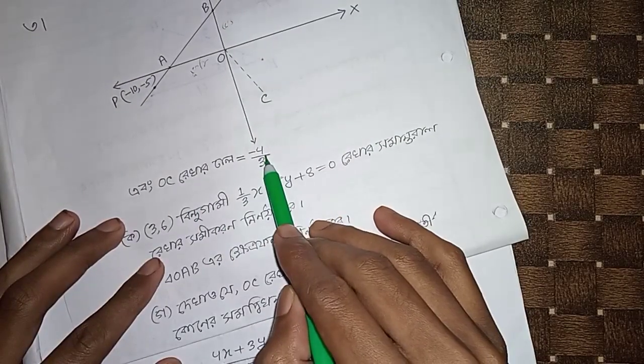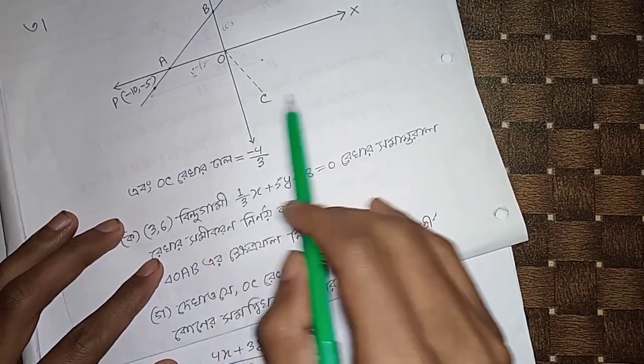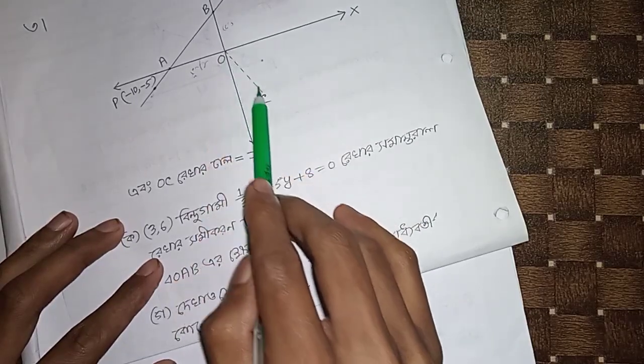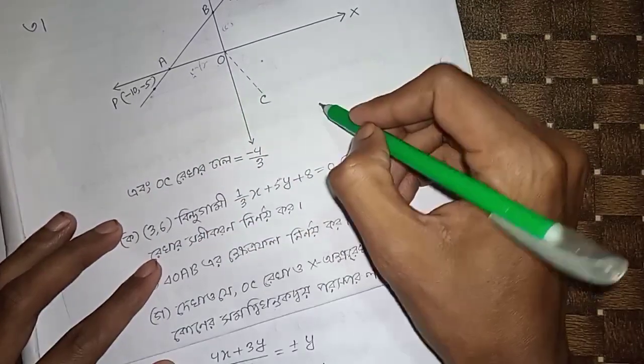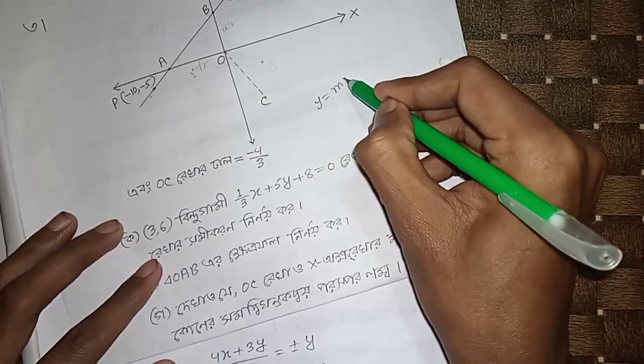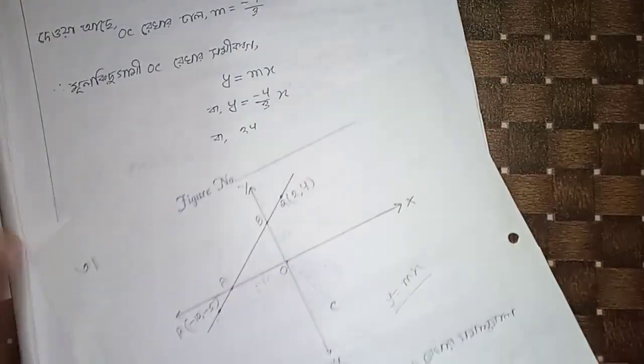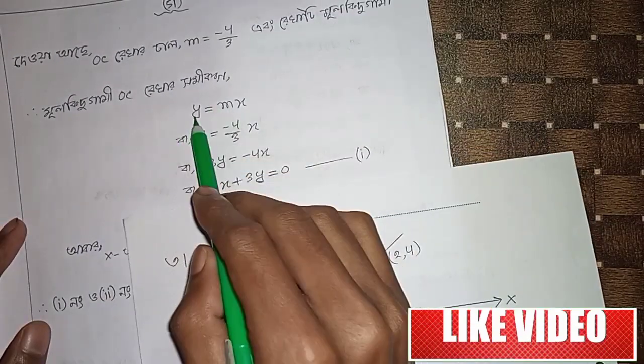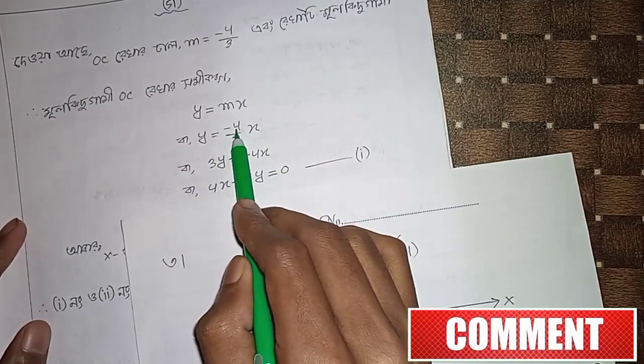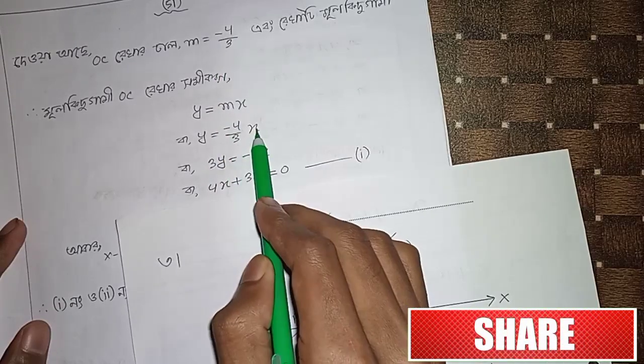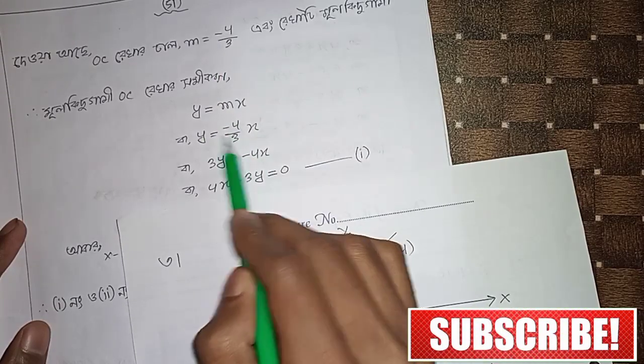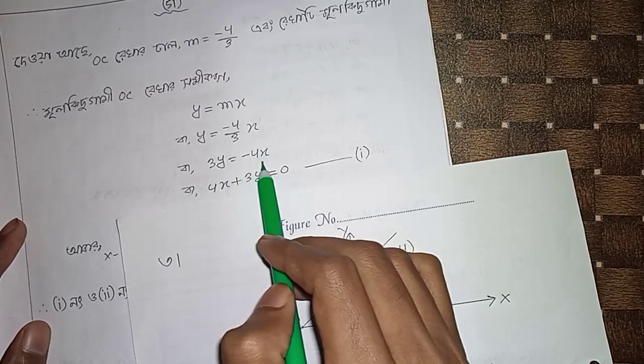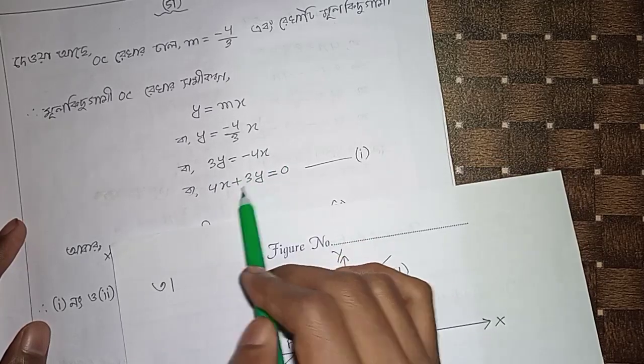To the ekaar dal minus 4 by 3. Mul bindhagami reka taale mul bindhagami rekaar. I am going to y equal to mx, y equal to m minus 4y is 3y and minus 4x. I am going to 4x plus 3y equal to 0.